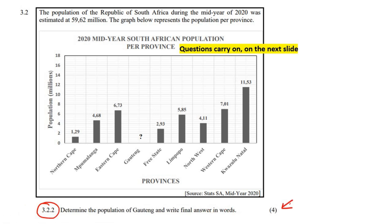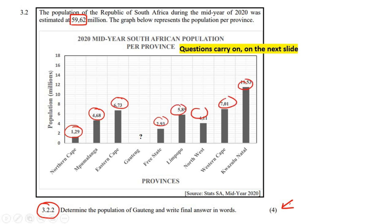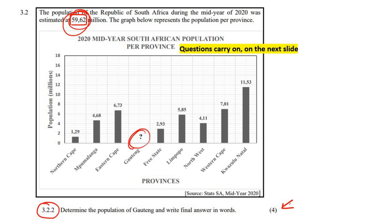This question, for four marks, says: determine the population of Gauteng. Now think about this — we know that there are 59.62 million people in South Africa at that time. We have values for Northern Cape, Mpumalanga, Eastern Cape, Free State, Limpopo, Northwest, Western Cape, and KwaZulu-Natal. So if we add all of those numbers together, we can subtract from the total to see how much is left over for Gauteng.